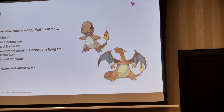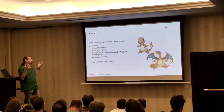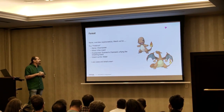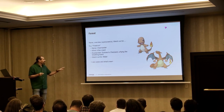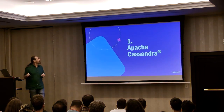For example, this is a Charmander Pokémon — it's a fire lizard that evolves into another type of fire-breathing lizard, but it does have a weakness, which is water. Similarly for each technology I'll note a few things like use cases and what's new.